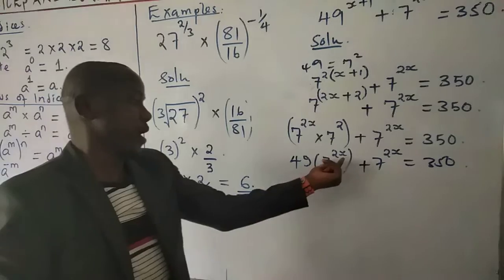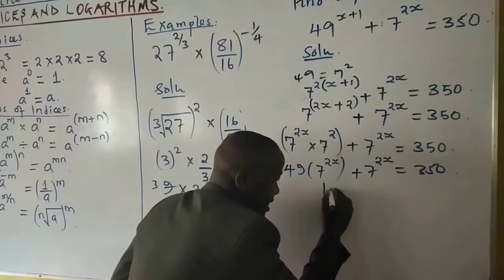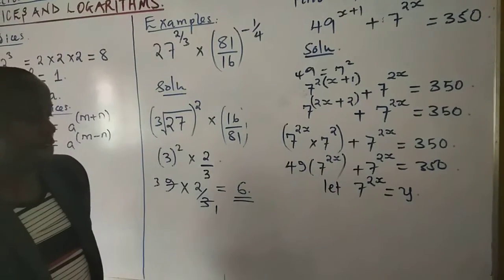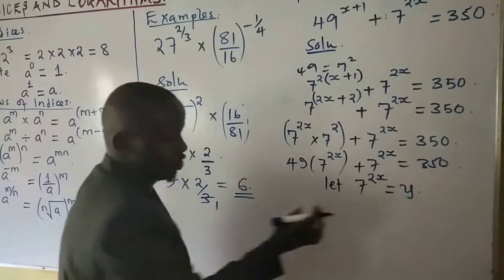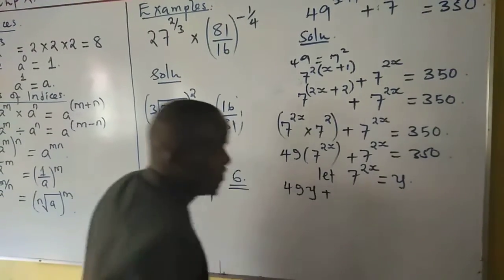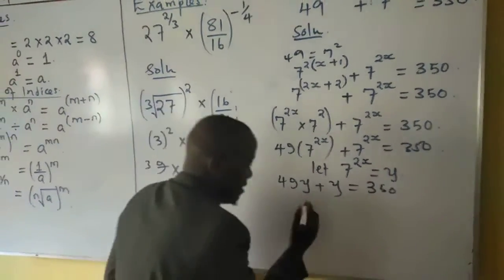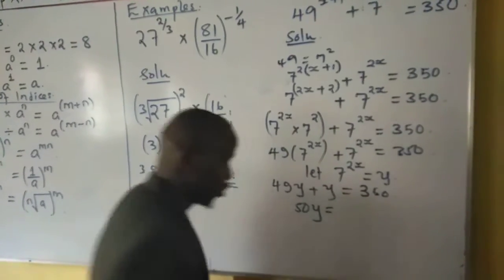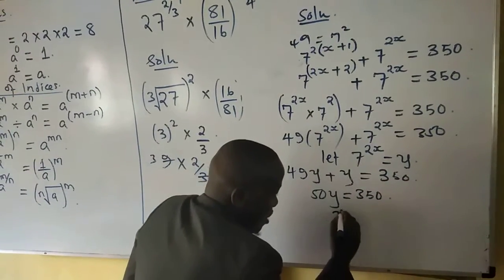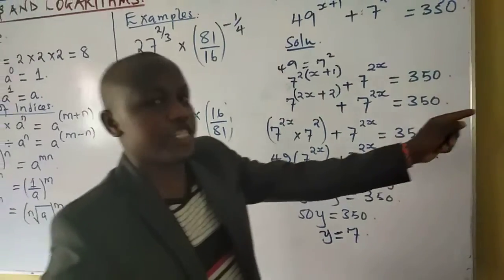Substituting y for 7^(2x), the equation becomes 49y + y = 350, which gives 50y = 350. Dividing both sides by 50, we get y = 7.